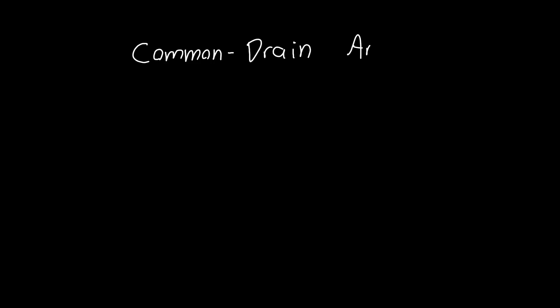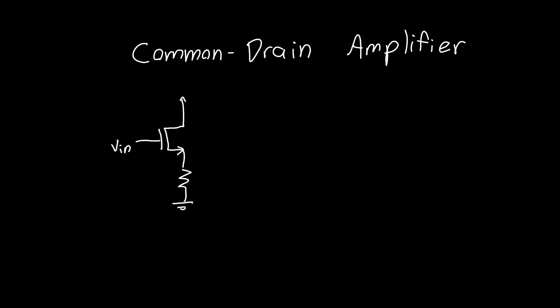In this video we're going to analyze the common drain amplifier. This is a single transistor MOSFET amplifier, one of the three fundamental MOSFET amplifiers. We apply some input voltage VIN and take the output voltage from the source, which makes it different from the common source amplifier where the resistor is on the other side, making it a little trickier to analyze.